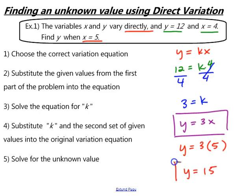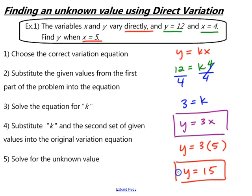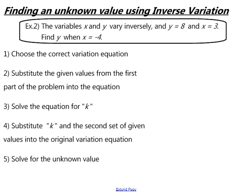This is what the question asked us to find. So in each of these questions, we have two different answers: one is the equation that relates the variables, and two, the value of the unknown variable we're looking for. Next, let's walk through a problem involving finding values of an inverse variation.